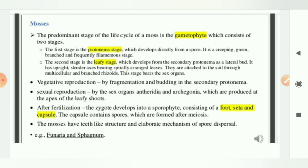Next is sexual reproduction. Here, by the sex organs such as antheridia in case of male and archegonia in case of female, these are produced at the apex, at the tip of the leafy shoots. And after fertilization, what happens? Zygote will develop into a sporophyte. And this sporophyte consists of foot, seta, and capsule.